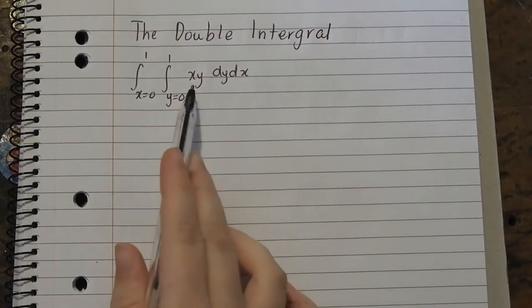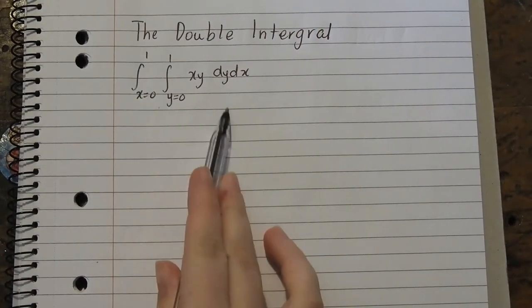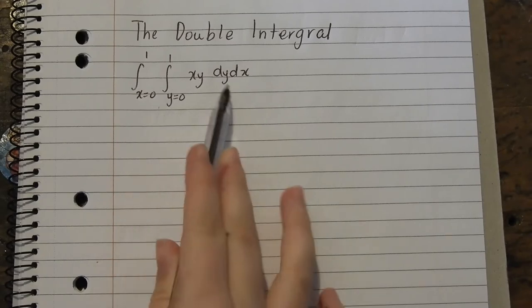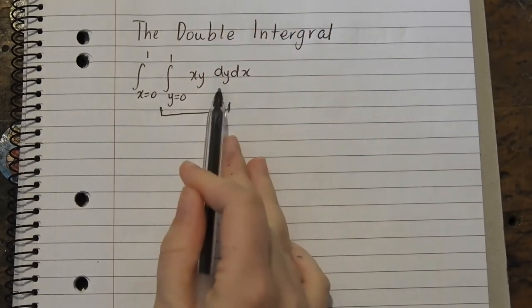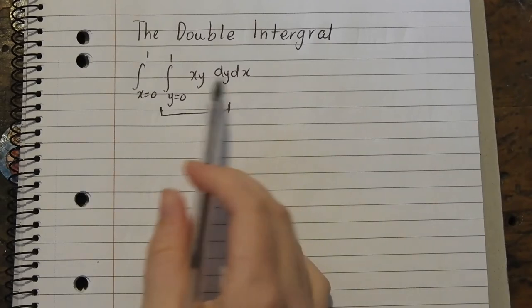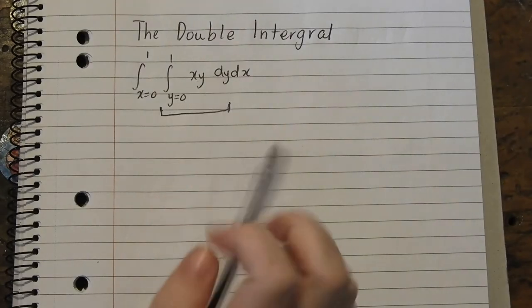So to do this, we do the middle integral first, so the inner integral, which is this guy. So we're integrating with respect to y, which means we need to keep x as a constant.